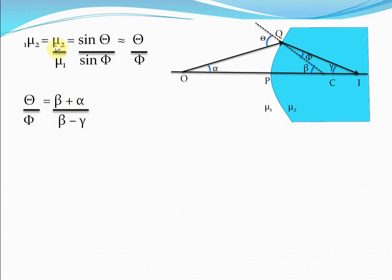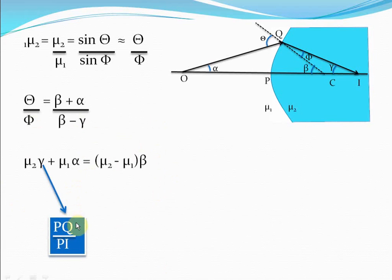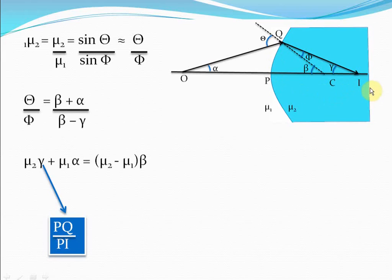So if you put mu2 by mu1 equal to (beta plus alpha) divided by (beta minus gamma), this is what you get. Now, gamma here is PQ by PI because the angles alpha, beta, and gamma are all very small. Gamma can be taken to be PQ divided by PI, since gamma approximately equals tan gamma, which equals PQ upon PI if we take this arc to be very small in length.